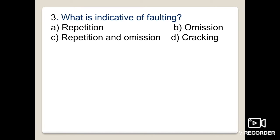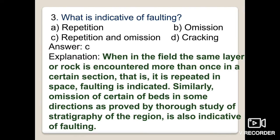The third question asks: what is indicative of faulting — repetition, omission, repetition and omission, or cracking? The answer is repetition and omission. When the same rock layer is encountered more than once in a section, that is repetition, and faulting is indicated. Similarly, omission of certain beds in some directions, determined by thorough study of stratigraphy, is also indicative of faulting. Both repetition and omission are key indicators.